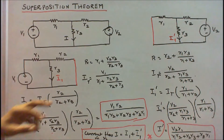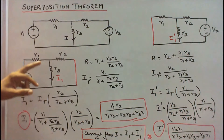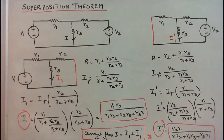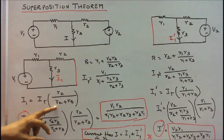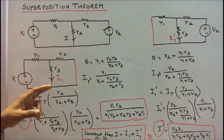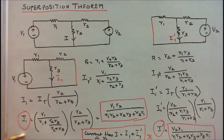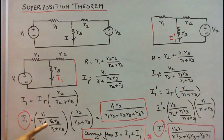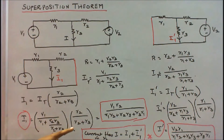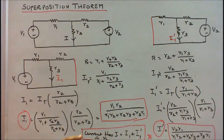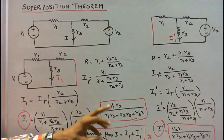Once I know the total current, I can find I1, the current flow through R3. Using the current divider rule: I1 equals V1 divided by [R1 + (R2·R3)/(R2+R3)] multiplied by R2/(R2+R3), which simplifies to V1·R2 divided by (R1·R2 + R2·R3 + R3·R1).